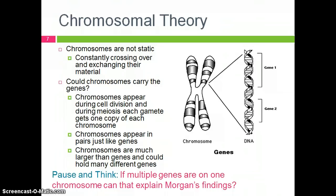So, is it possible that chromosomes are the carriers of genes? Let's think about that for a moment. Chromosomes appear during cell division, and during meiosis each gamete gets one copy of each chromosome. Chromosomes appear in pairs just like genes, and chromosomes are much larger than genes and could easily hold many different genes. So, if multiple genes are in one chromosome, can that explain Morgan's findings?